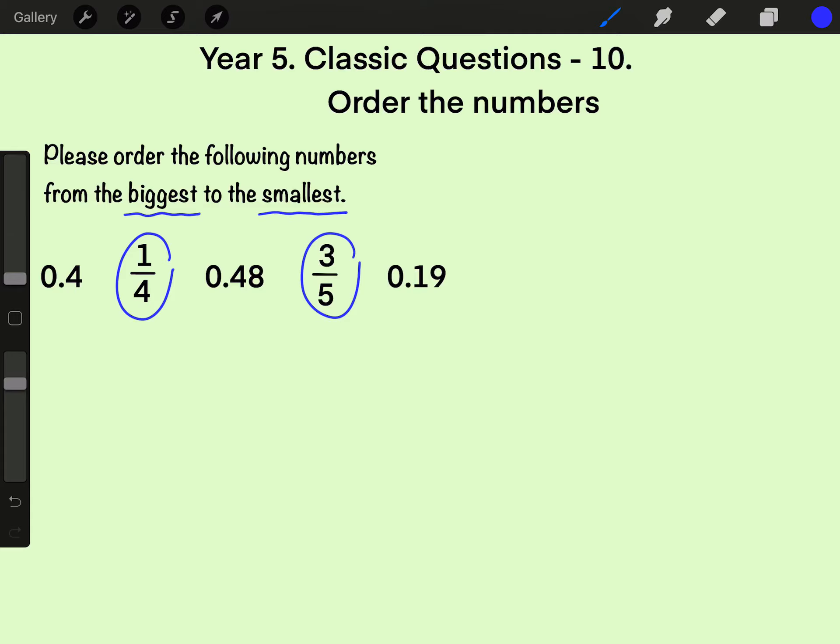So, one quarter equals to 0.25. You may have already remembered this, but how do we get it? Let's review together one more time. One quarter actually equals to 1 divided by 4. And because 1 is smaller than 4, we need a decimal point and a 0 on the tenth position.